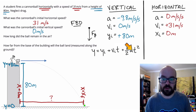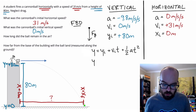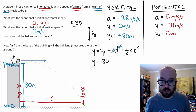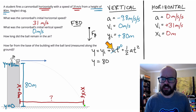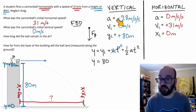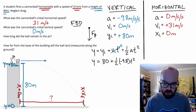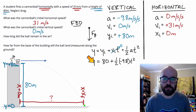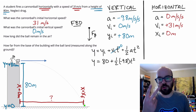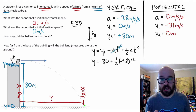We're going to substitute in the variables we know. So y equals 80 — our initial height — plus zero, since our initial vertical velocity is zero. Plus one-half times negative 9.8 times t squared. Now we have our equation with two variables: y and t.